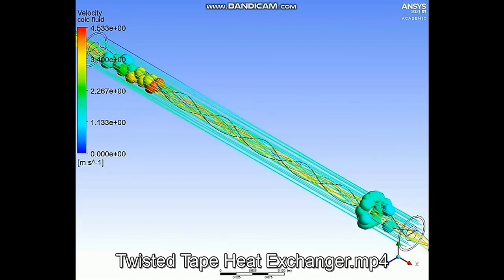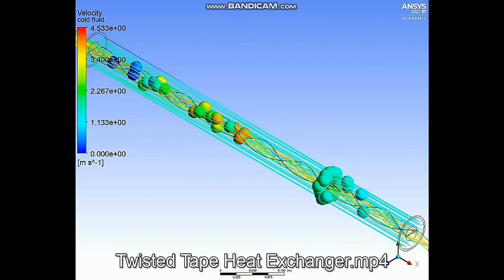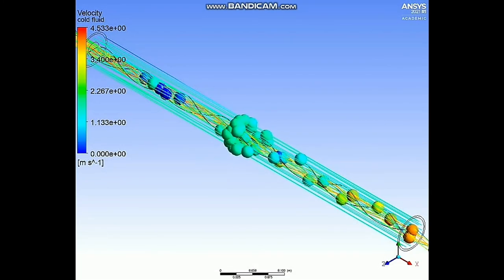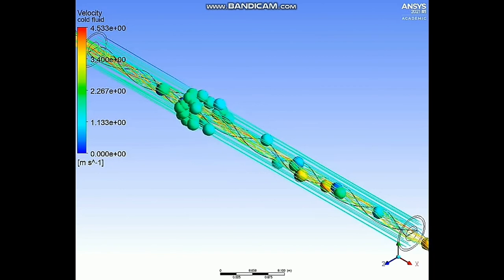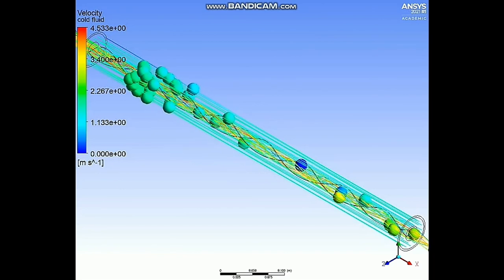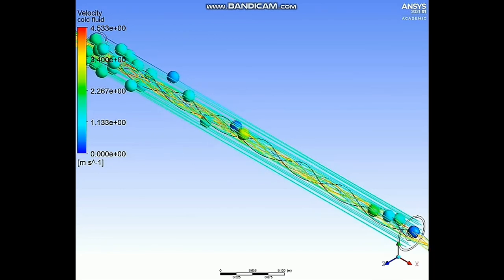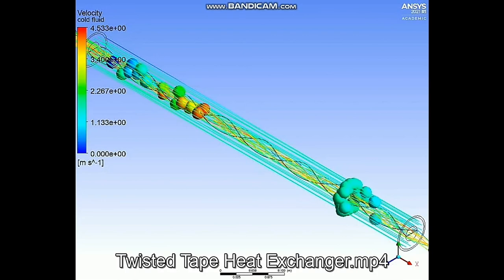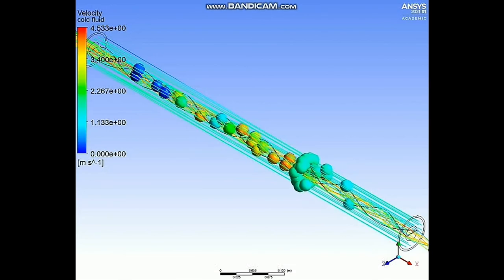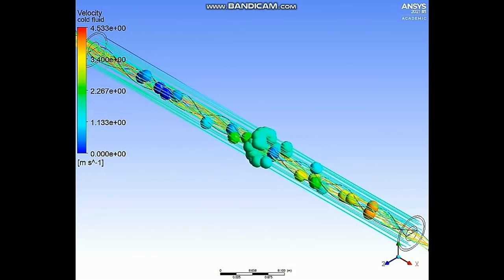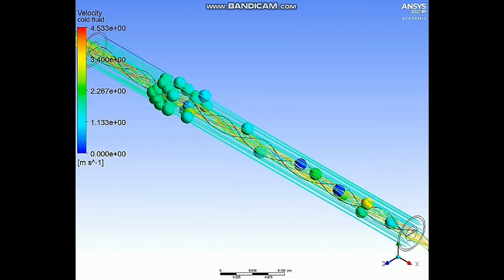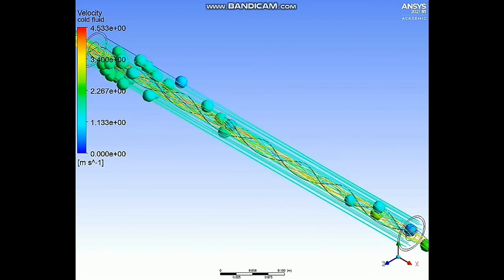This is the second animation in which we can see that the hot fluid after passing through the tube is having much lesser temperature as compared to the simple heat exchanger. We can also see that when the fluid comes inside the tube where the twisted tape is inserted, the velocity of the fluid is also reduced, and due to this, the heat exchanger capacity of this heat exchanger is greater than the simple heat exchanger.